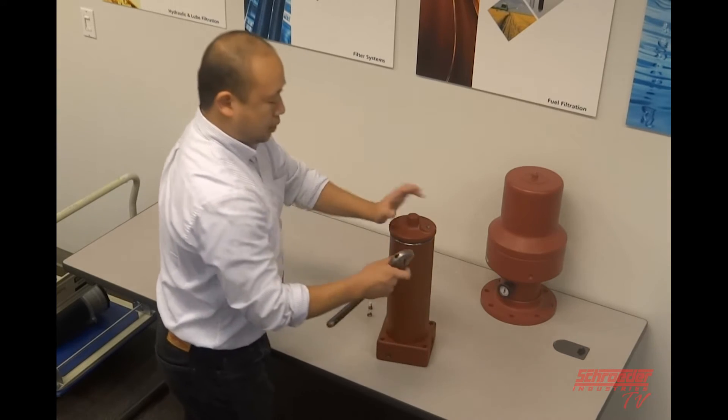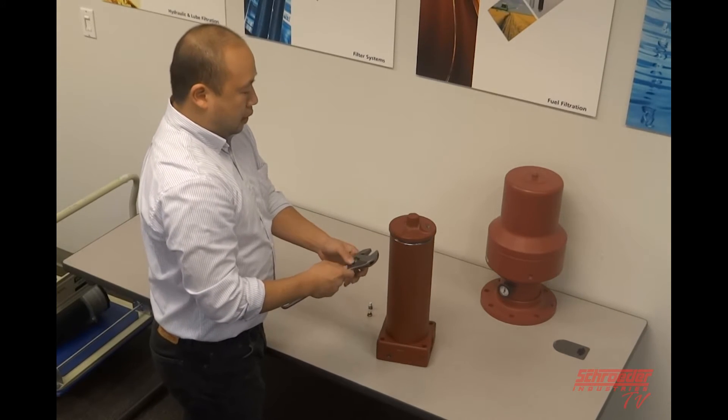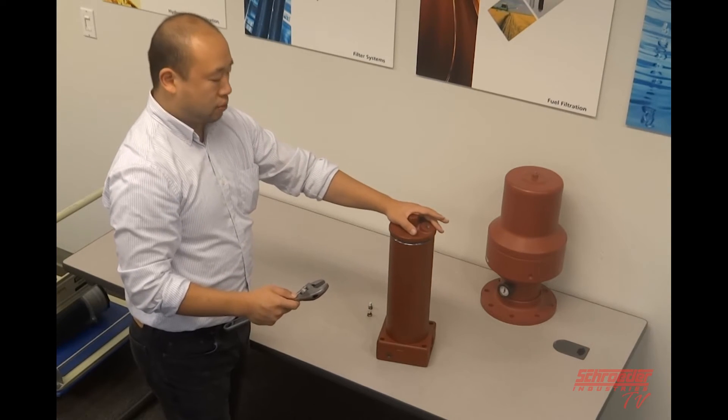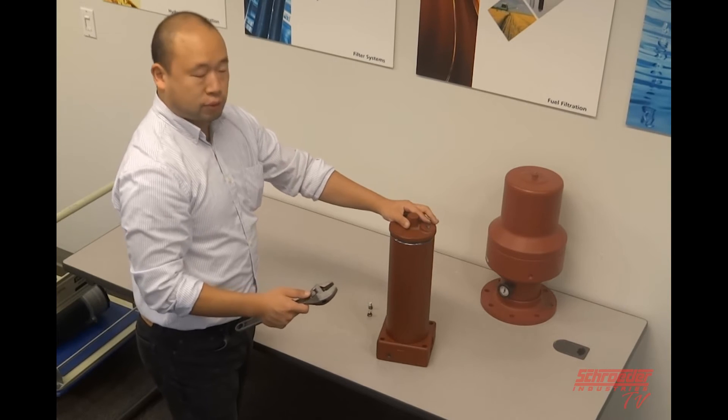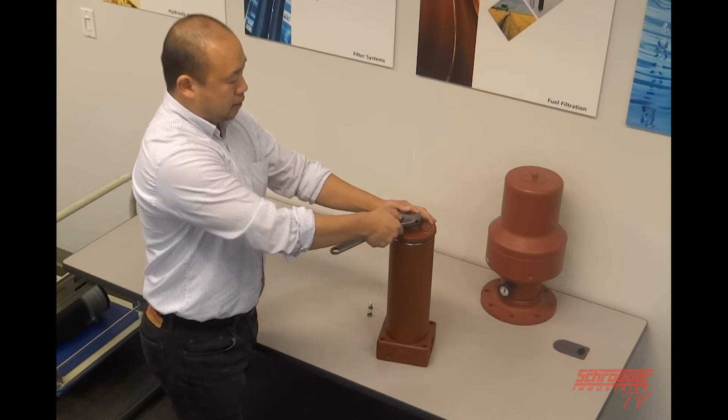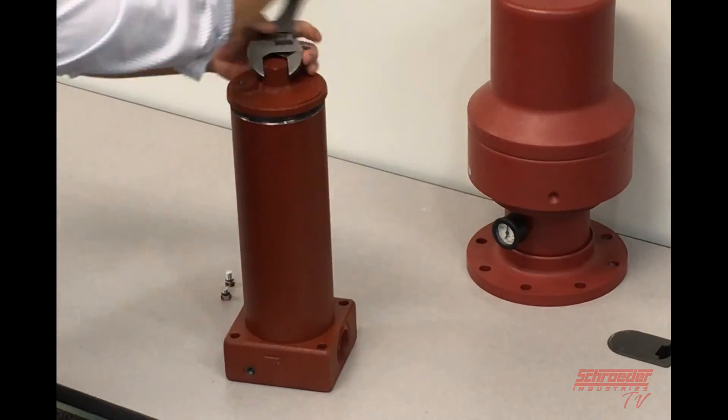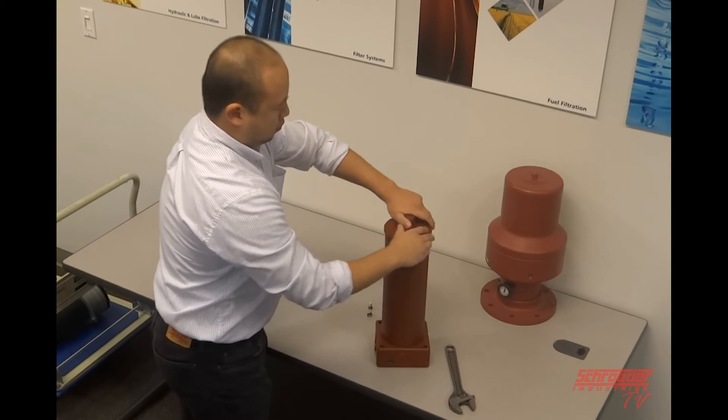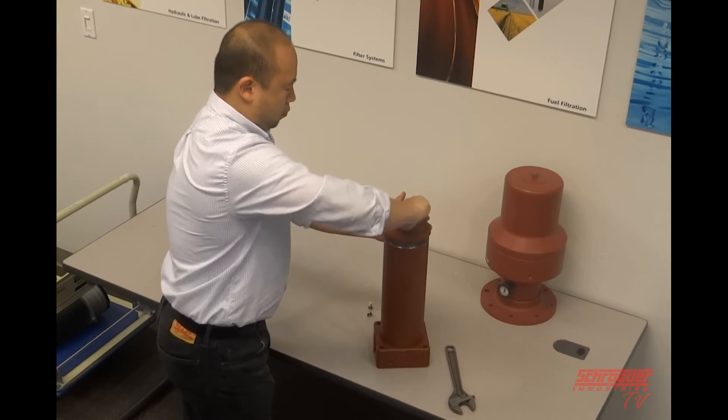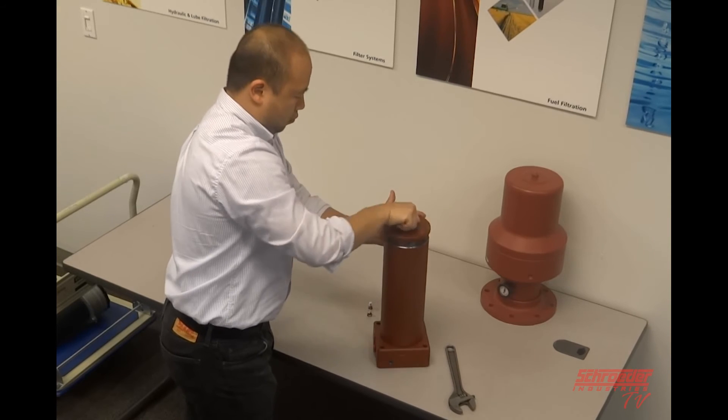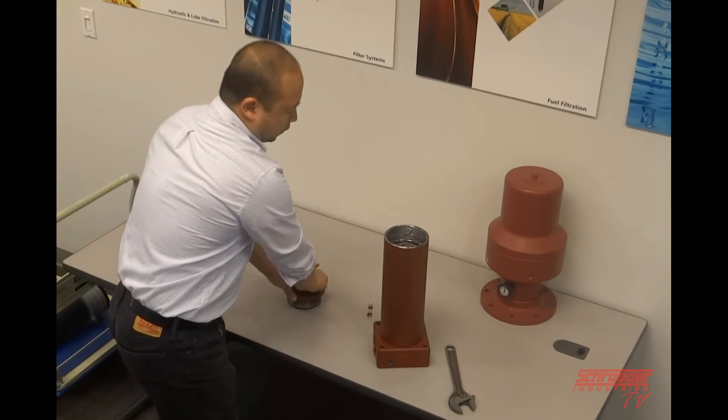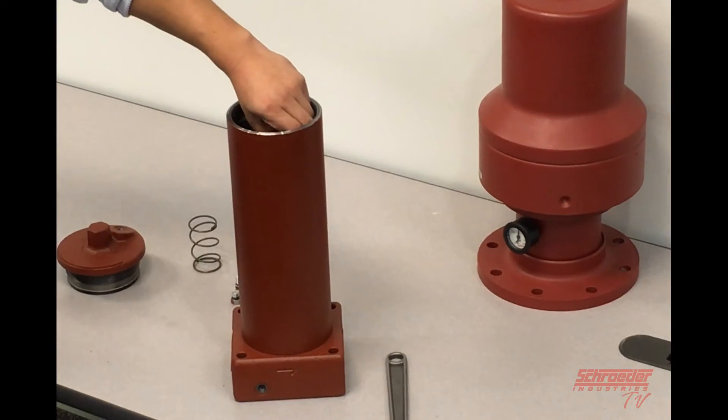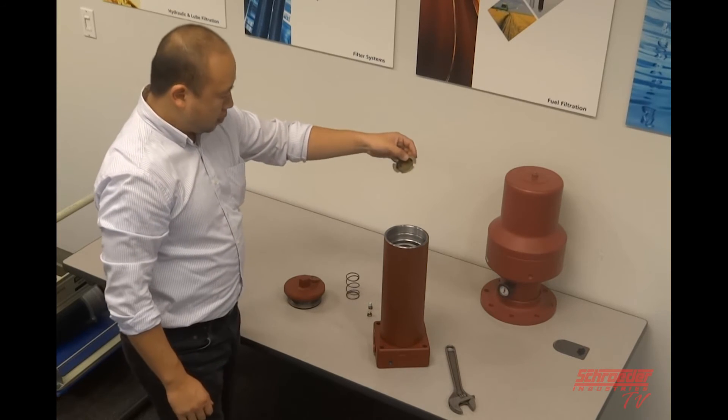GKF30 are usually torqued to 100 psi, 100 pounds on the cap. So you want to use the torque wrench accordingly to remove the cap. And once that's off, you will take the spring and the cap from the element.